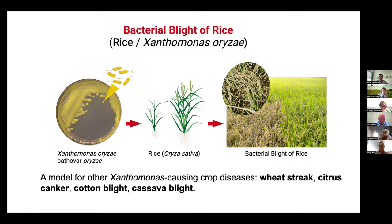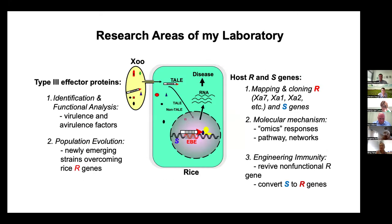This is a vascular disease, and we use it as a model to study microbe-host interaction. At the same time, this disease could function as a model for other important crop diseases like wheat streak, citrus canker, cotton blight, and cassava blight, which are caused by Xanthomonas. I will present this working model to show how we can use genome editing to harness some of the lateral pathways to make resistance in plants.